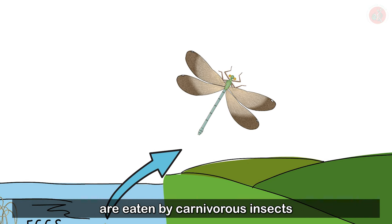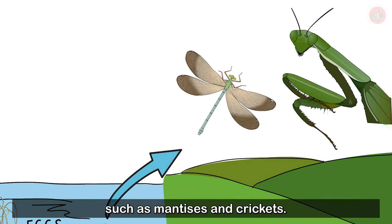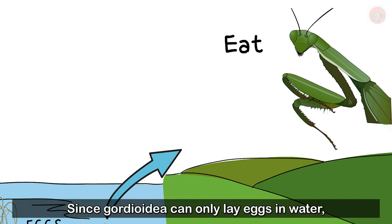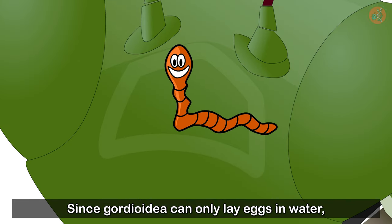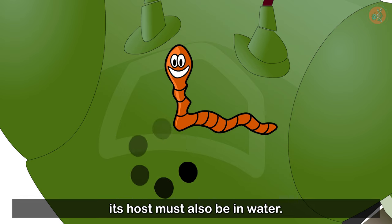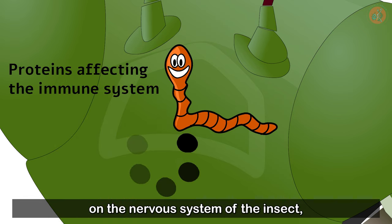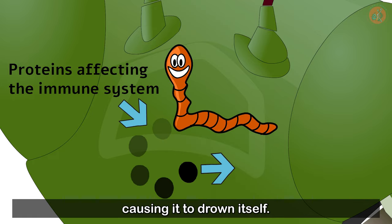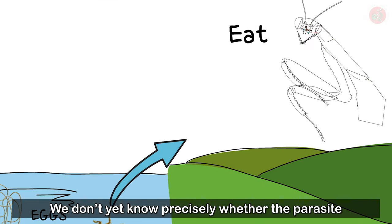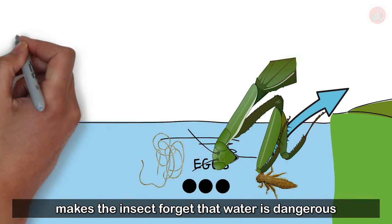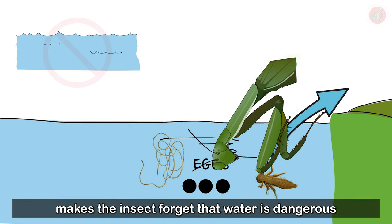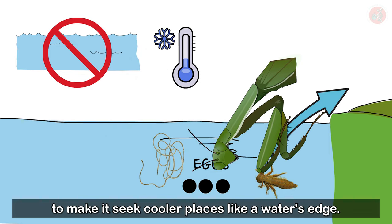Since Gordioidea can only lay eggs in water, its host must also be in water. So Gordioidea makes a protein that acts on the nervous system of the insect, causing it to drown itself. We don't know yet precisely whether the parasite makes the insect forget that water is dangerous, or raises the insect's body temperature to make it see cooler places like a water's edge.